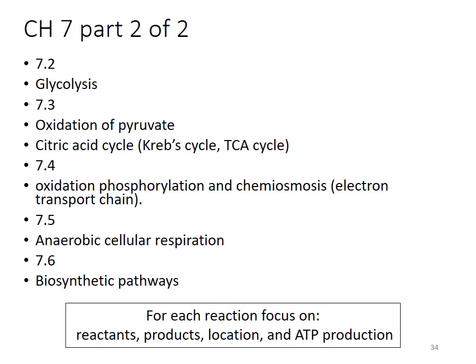That was the end of chapter seven. We covered glycolysis, oxidation of pyruvate, the citric acid cycle (also called the Krebs cycle and the TCA cycle), oxidative phosphorylation and chemiosmosis (also called the electron transport chain or ETC), and anaerobic cellular respiration. Some reactions have multiple names — knowing them all helps when you encounter them in other classes or videos. For each reaction, focus on reactants, products, where they happen, and how much ATP you take home.